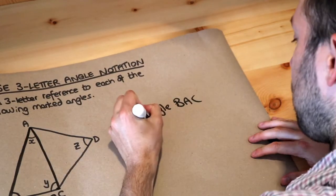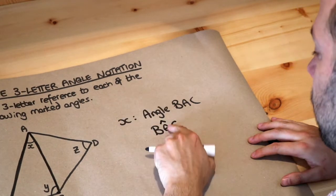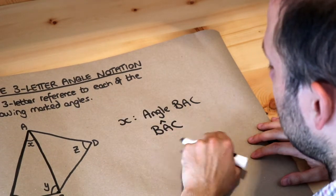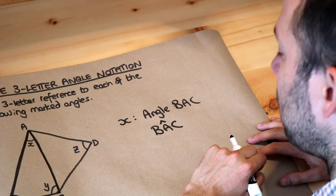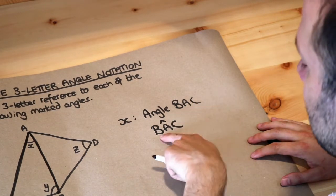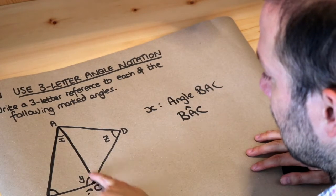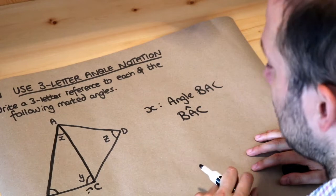Sometimes you also see it written as BAC with a little caret above the A in the middle, so that would also mean angle BAC. It doesn't matter which way, but the point is the order of the letters will still be the same. We could also refer to this using the other direction, CAB, and that would be the same angle.